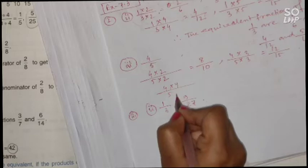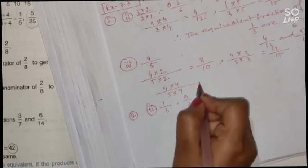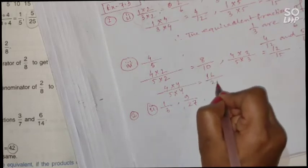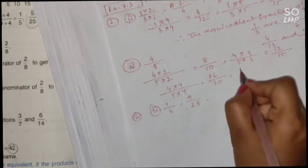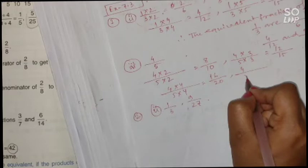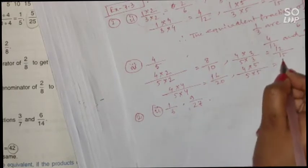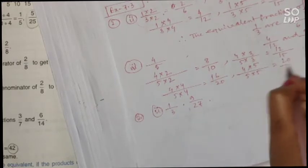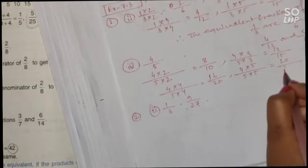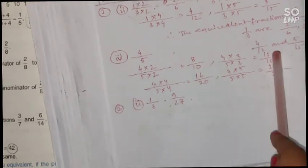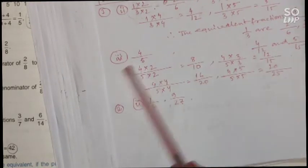Now multiply numerator and denominator by 4: 4 times 4 is 16, 5 times 4 is 20 — giving 16 by 20. Now multiply by 5: 4 times 5 is 20, 5 times 5 is 25 — giving 20 by 25. So these are the four equivalent fractions of 4 by 5.